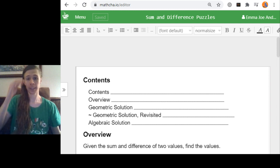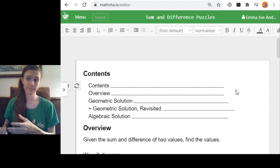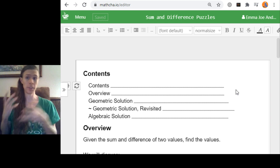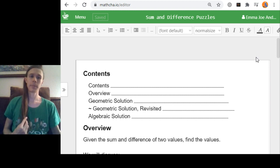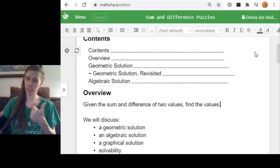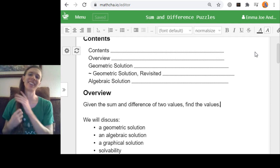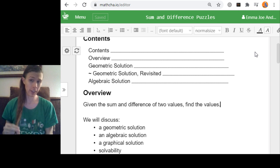The overview is we've got this initial puzzle where you're given the sum and difference of two values and you're asked to find what the values were. So like maybe they add up to 12, but their difference is 4. What were the two numbers? My intention is to go over a geometric solution and an algebraic solution. And those are the two things I'm likely to cover in this 20-minute session. But then later, I want to cover a graphical solution as well, and maybe even another geometric solution, which is what this Geometric Solution Revisited is about.